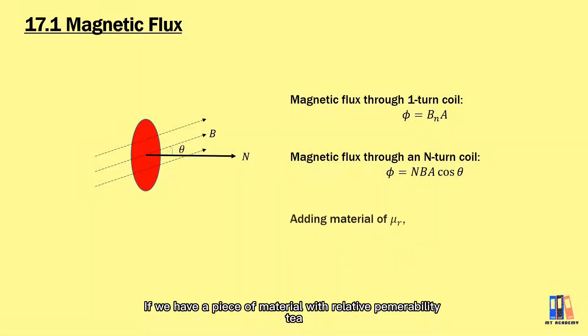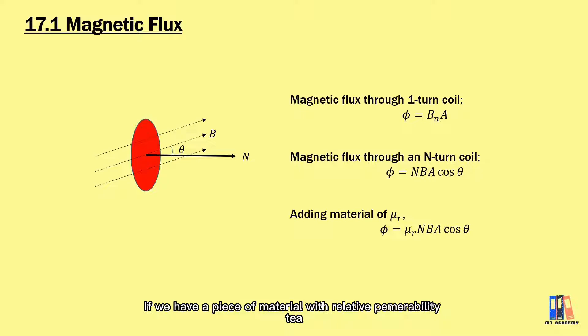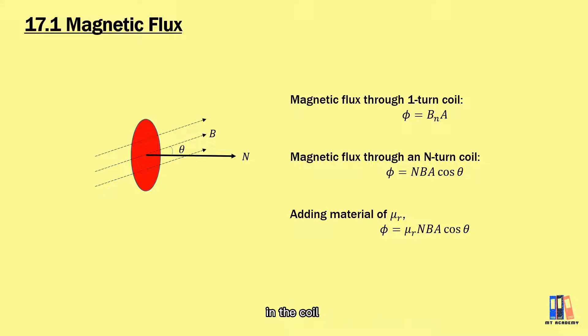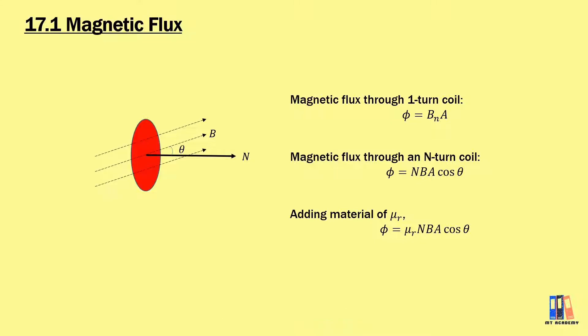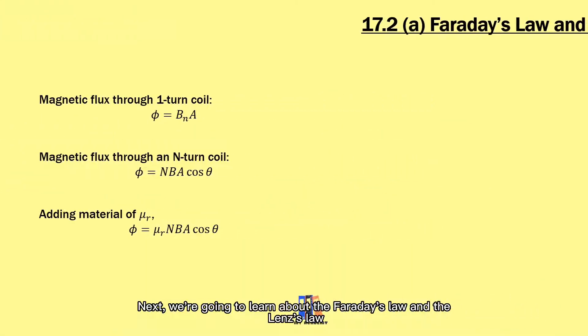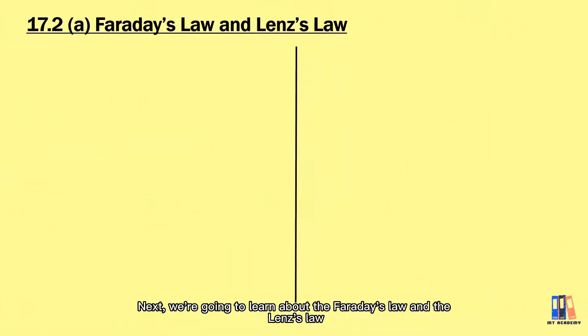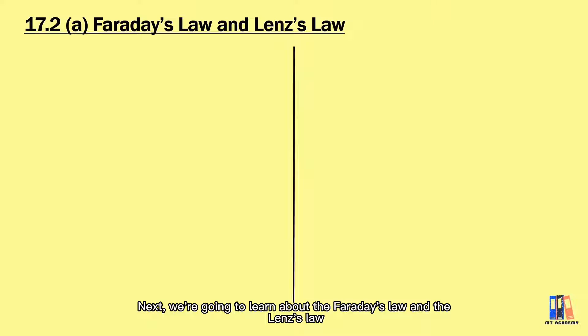If we have a piece of material with relative permeability μᵣ in the coil, there is more flux in the coil, which is defined as μᵣNBAcos(θ). Next, we're going to learn about Faraday's law and Lenz's law.